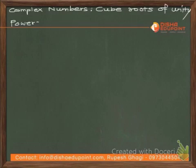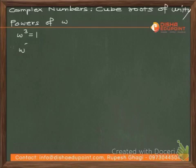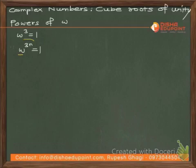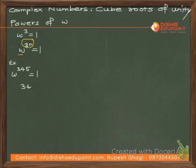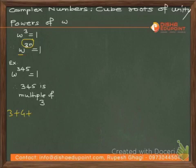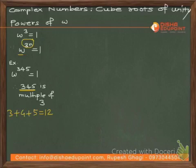Let's study the powers of ω. Since ω is a cube root of unity, ω³ = 1. Any power of ω that is a multiple of 3 equals 1. For example, ω^345 = 1 because 345 is a multiple of 3 — we can verify this since the digit sum 3+4+5 = 12 is divisible by 3.